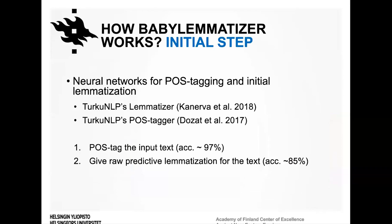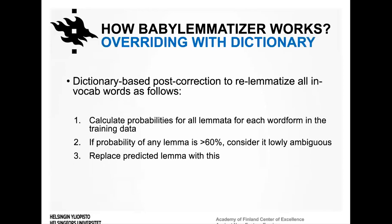Our lemmatizer aims to combine the strengths of neural networks and dictionary-based lemmatizers. We first lemmatize and POS-tag new text using Turku NLP's universal lemmatizer, using existing Babylonian texts from the late first millennium BCE from the ORACC corpus as training data — carefully lemmatized by Assyriologists over the last decade. This step gives a POS-tagging accuracy of 97%, but lemmatization accuracy is only 85%, so further steps are needed.